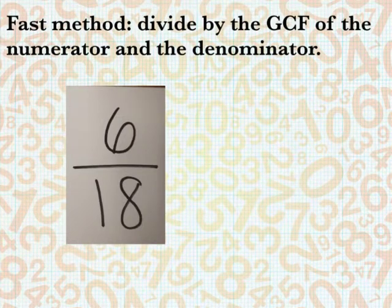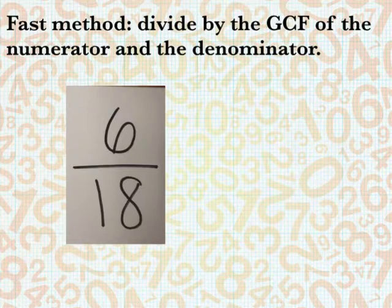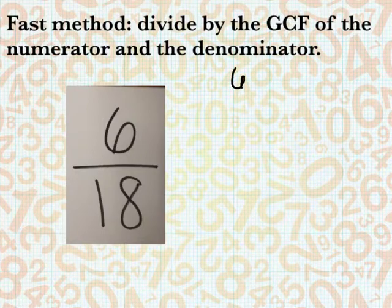The fast method for simplifying a regular fraction would be to divide the numerator and the denominator by the GCF of one another. So our numbers here are 6 and 18, and if we wanted to find the GCF we could do a little list.